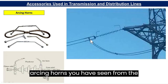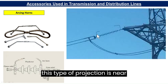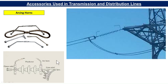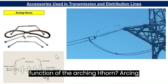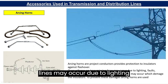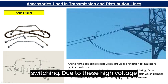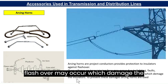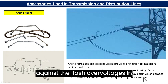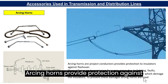Then there are arcing horns. You have seen these conductor projections near suspension insulators on various transmission lines. Arcing horns are projected conductors that provide protection to the insulators against flashover. Overvoltage on transmission lines may occur due to lightning faults or switching, which can cause flashover and damage the insulator. To prevent this damage, arcing horns are used. In insulators, there are two types of fault: flashover and puncture. Arcing horns provide protection against flashovers.